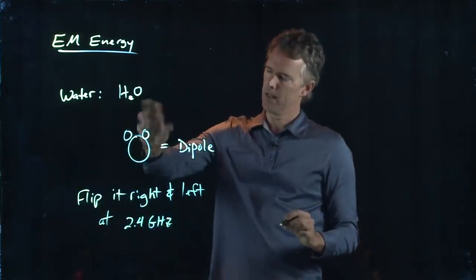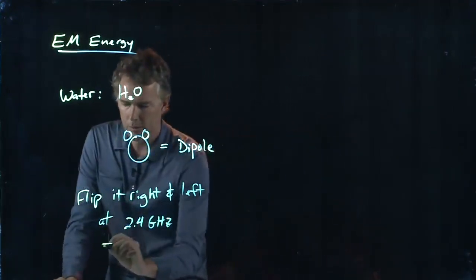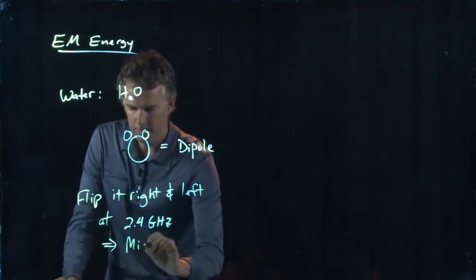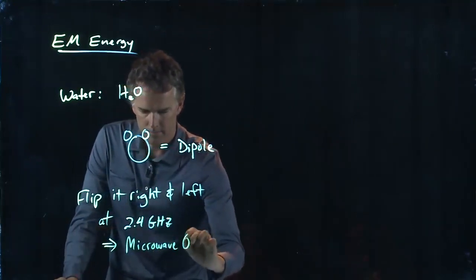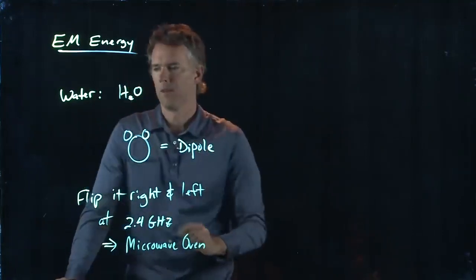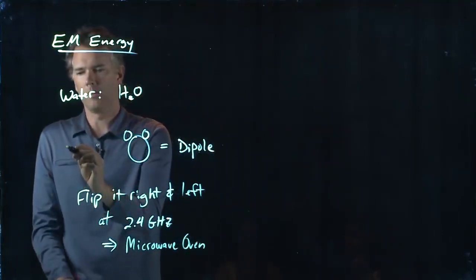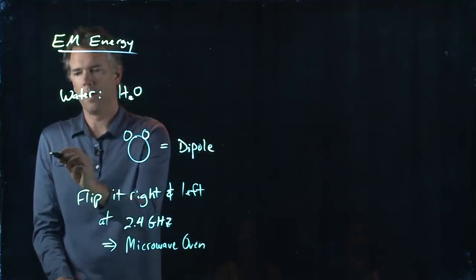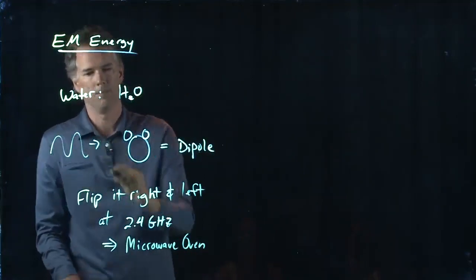this thing turning right and left, that is of course your microwave oven. And there's an electric field that's going to do that. And so we can draw this electric field coming in to do that.